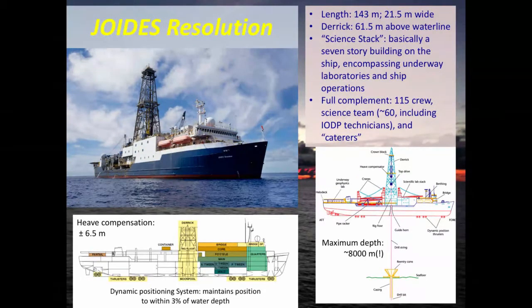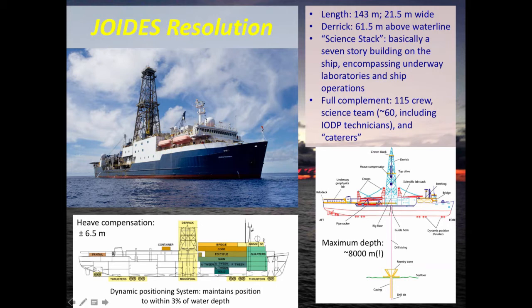The drilling goes straight through the bottom of the ship. They can go down to 8,000 meters below sea surface — basically the limit of the drill string they carry. So if they wanted to drill a 1,000-meter hole, they could do so in up to 7,000 meters of water. In our case it was never that deep; the deepest site was about 4,400 meters to the seafloor, with drilling a couple hundred meters beyond that.